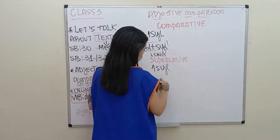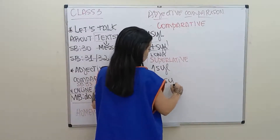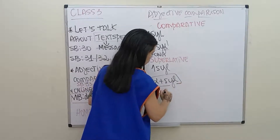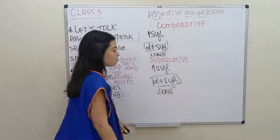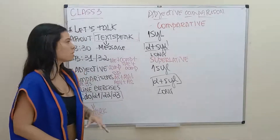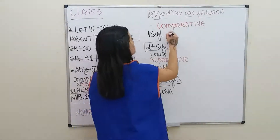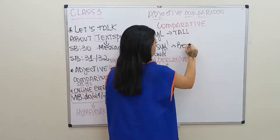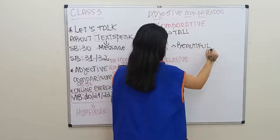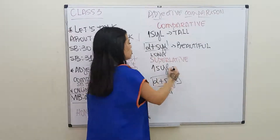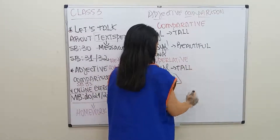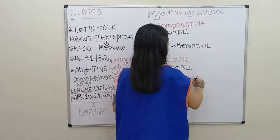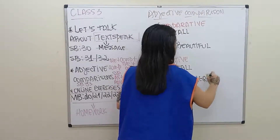One-syllable adjectives or two or more syllables — the long ones. I'll give you an example. One-syllable adjective, such as tall. Two or more, beautiful. One-syllable again, tall. Two-syllable adjective, let's put a different one: hungry. But also beautiful.